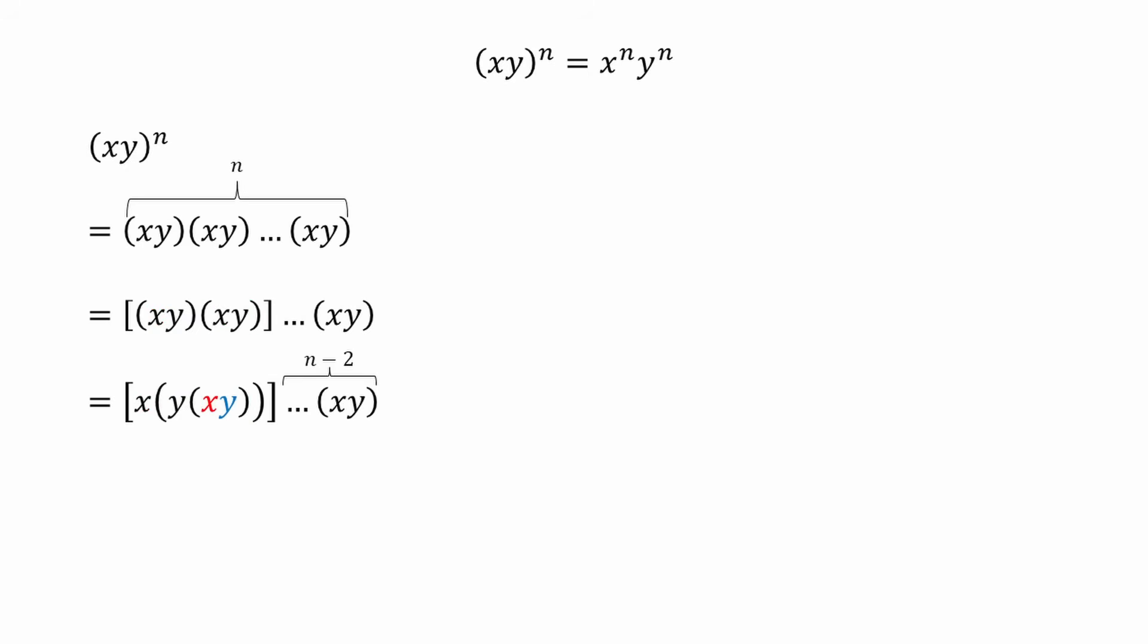According to commutativity, we can write it in this way. Apply the associativity again, we get y product y, which is y to the power of 2.